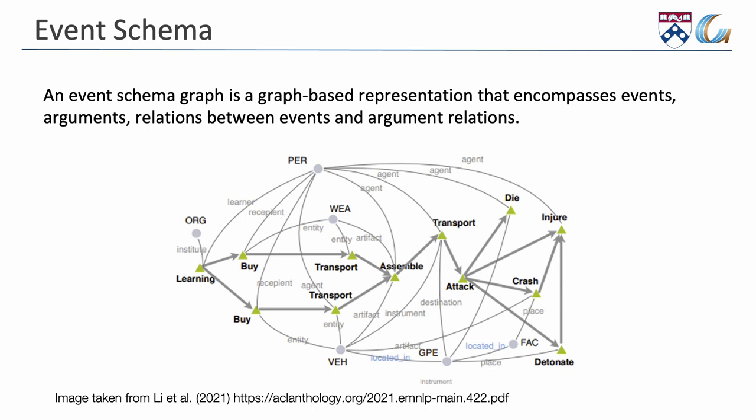An event schema is a graphical representation of the principal actions and participants in an event, along with relationships between events, such as temporal relations or hierarchical relations, as you see in the example here.